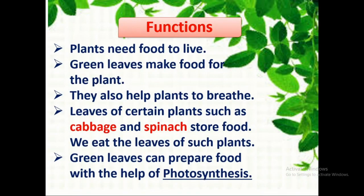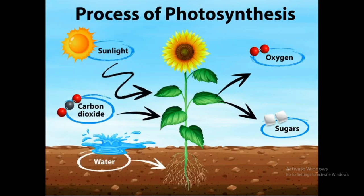Now let us see the functions of leaves. Leaves are very important parts of the plant. Green leaves make food for the plant and help the plant to breathe. Leaves of certain plants such as cabbage and spinach store food. Green leaves prepare food with the help of photosynthesis. Photosynthesis is the process by which green leaves make food with the help of carbon dioxide, water, sunlight, and chlorophyll. Photo means light and synthesis means putting together.